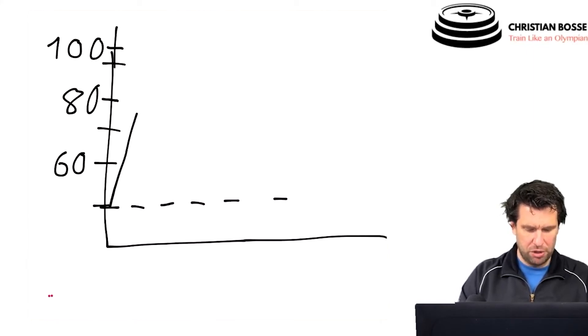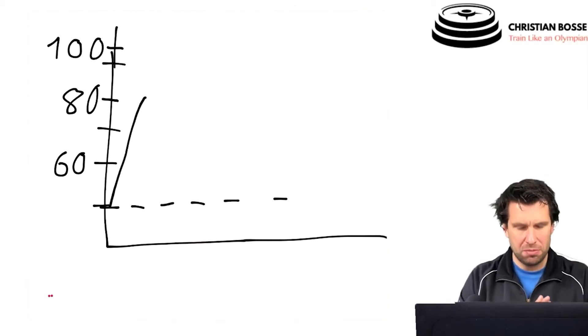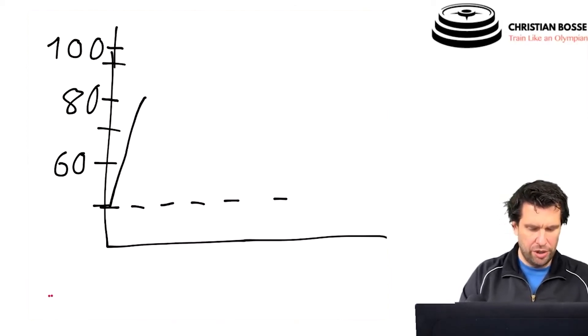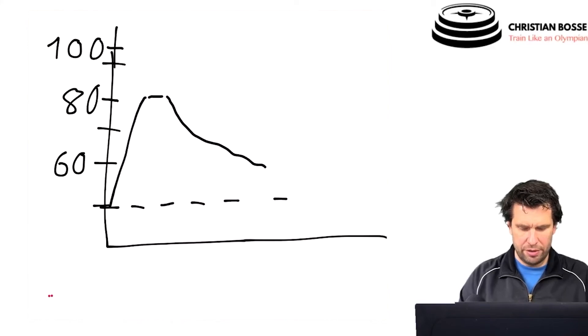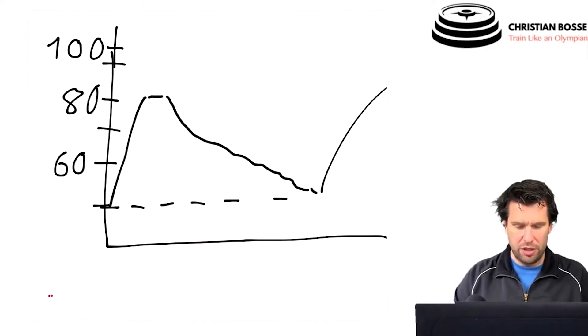So we work up to 80%, which is the lower threshold of our submaximal intensity. Hold it for, just a random example, one minute. And we allow recovery until we are at our resting heart rate or almost resting heart rate. And we rinse and repeat.